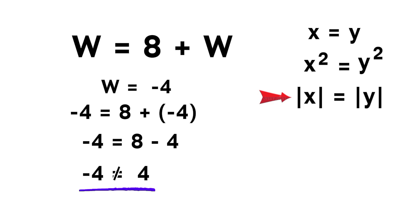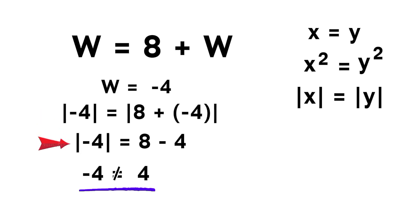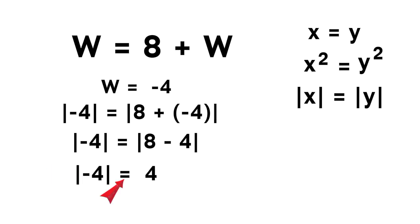So we should take the modulus on both sides. We get absolute value of negative 4 equals absolute value of 8 plus negative 4, which is absolute value of negative 4 equals absolute value of 4. And that gives us 4 equals 4.